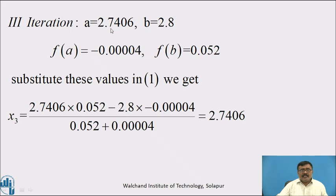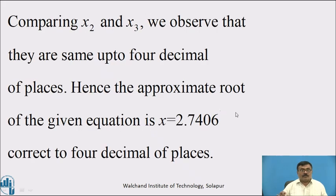Third iteration: a = 2.7406, b = 2.8, f(a) = −0.00004, f(b) = 0.052. Substituting in equation 1 and simplifying, we get x₃ = 2.7406. Comparing x₂ and x₃, they are the same up to 4 decimal places. Hence, the approximate root of the given equation is x = 2.7406, correct to 4 decimal places.